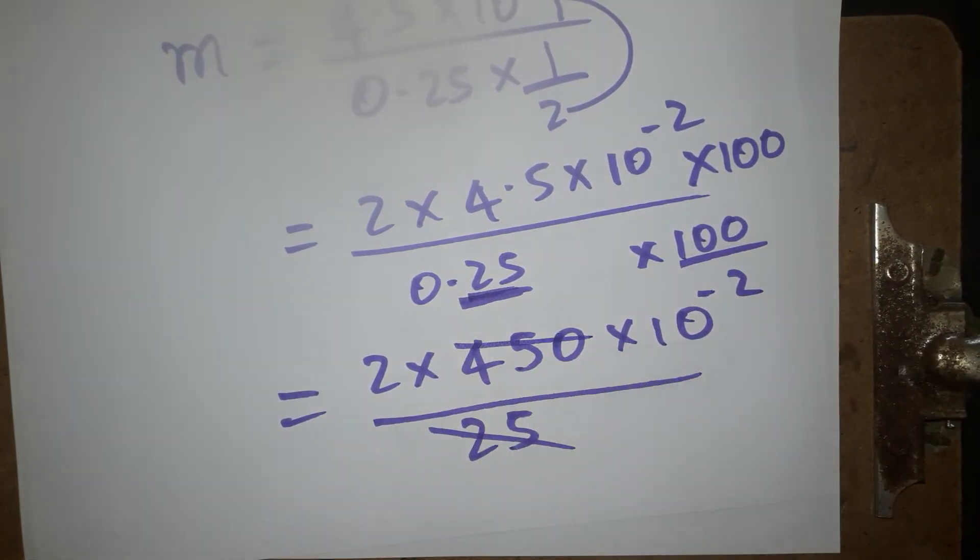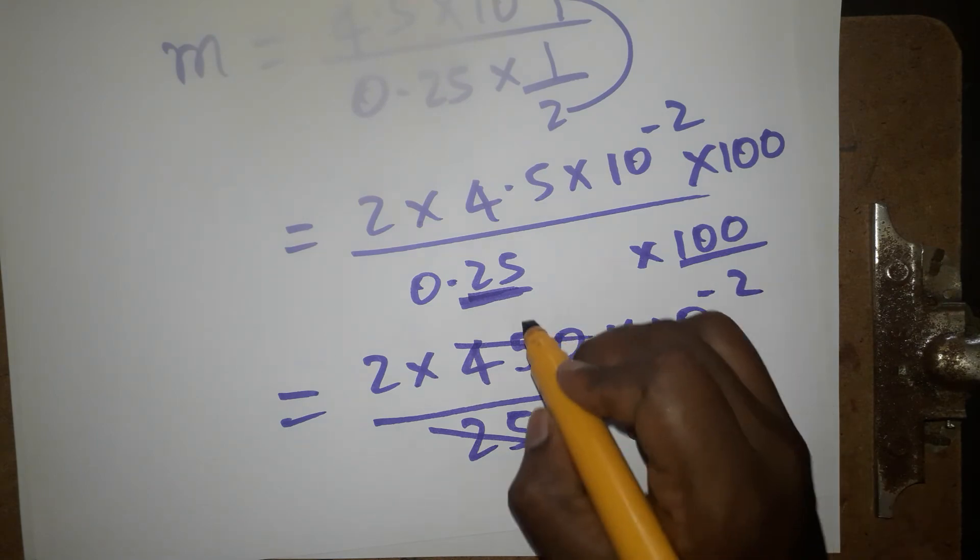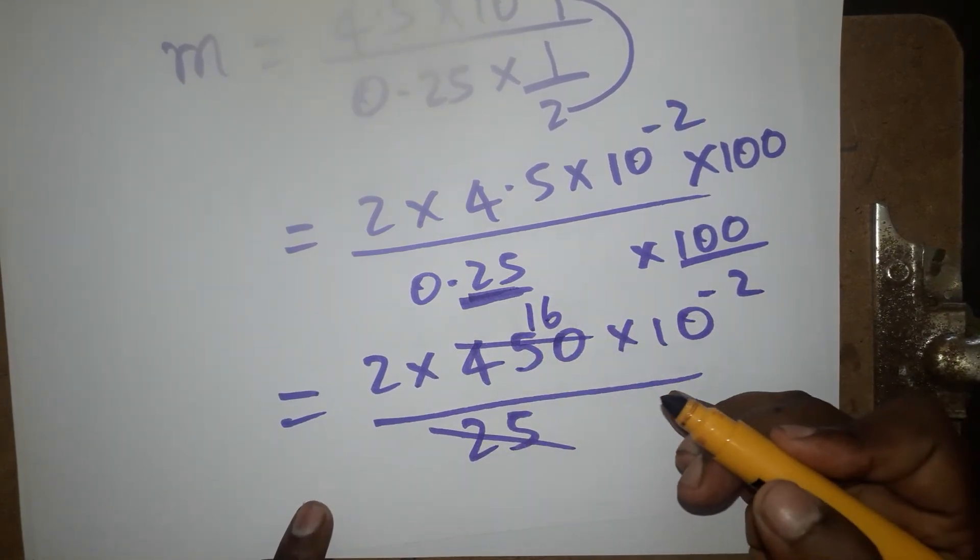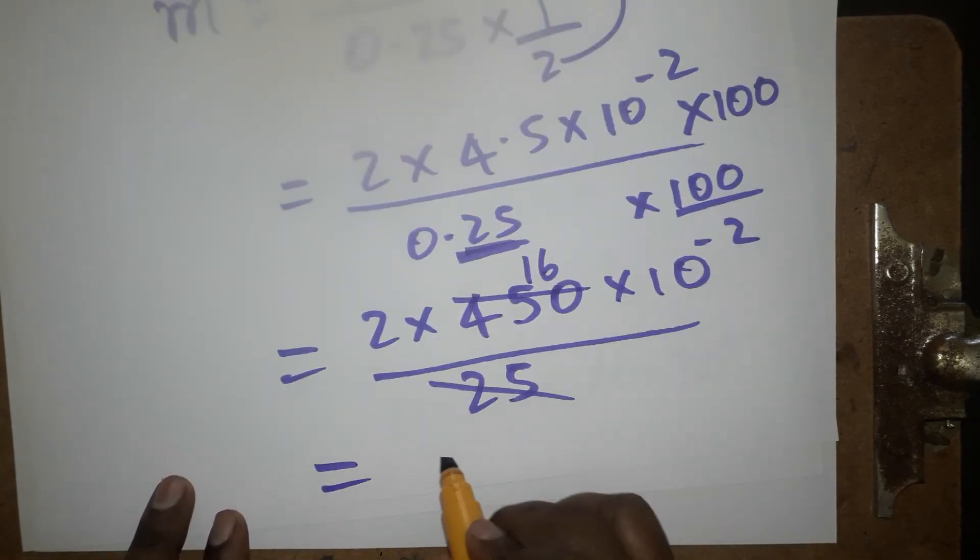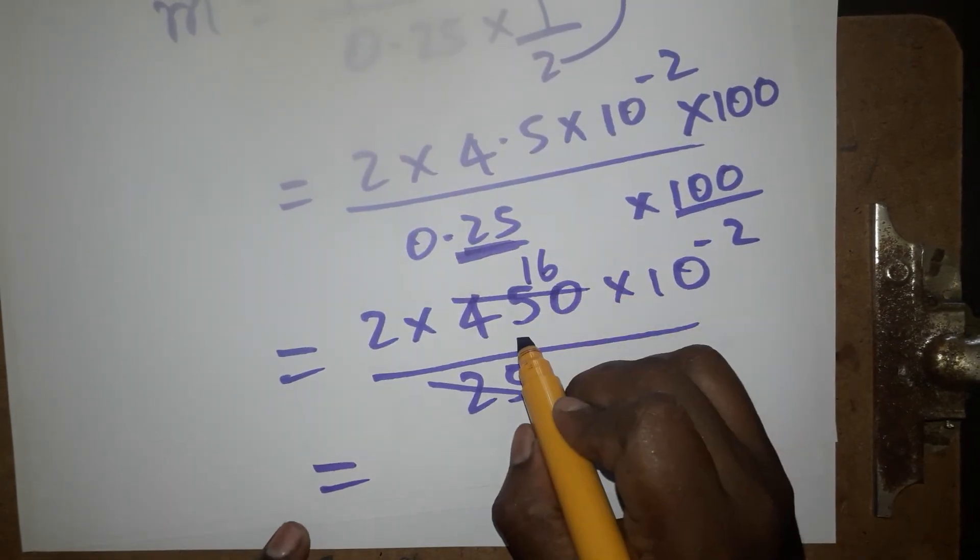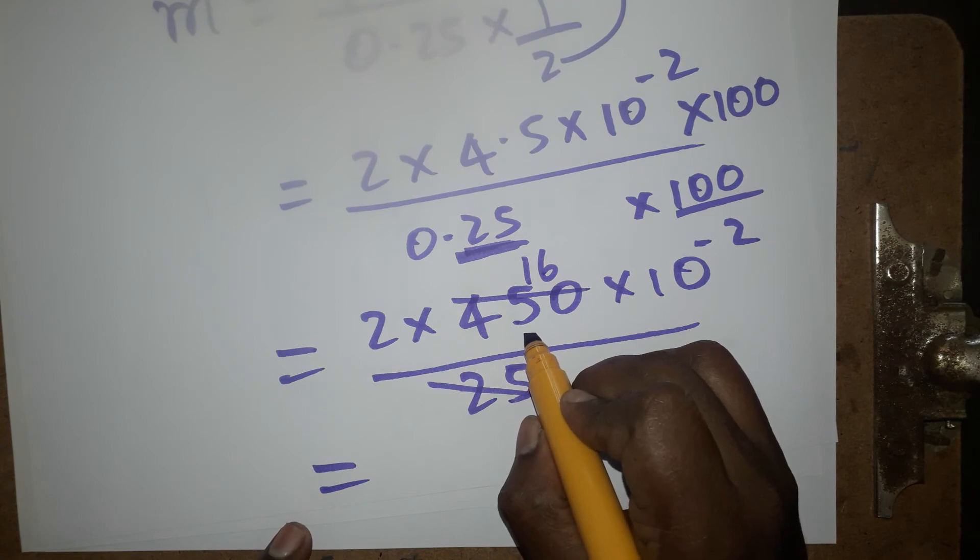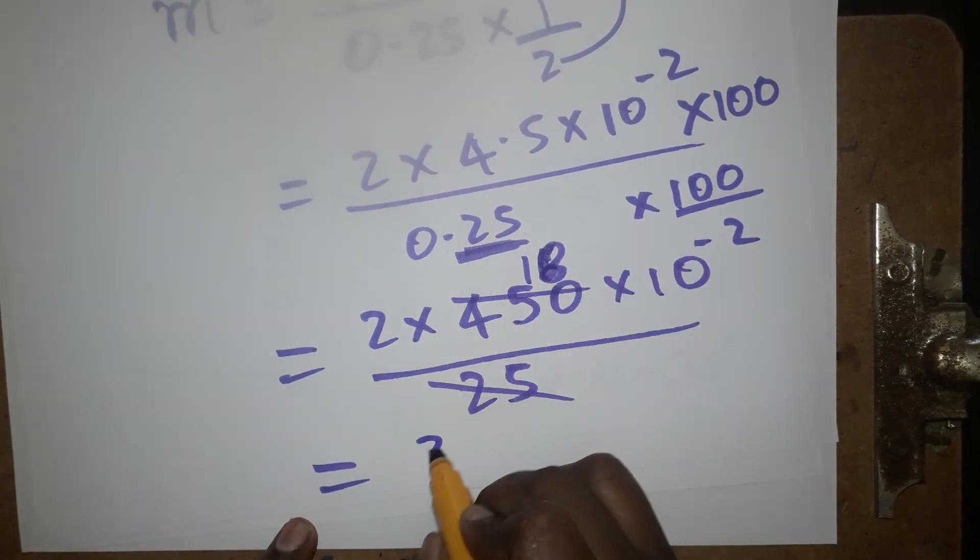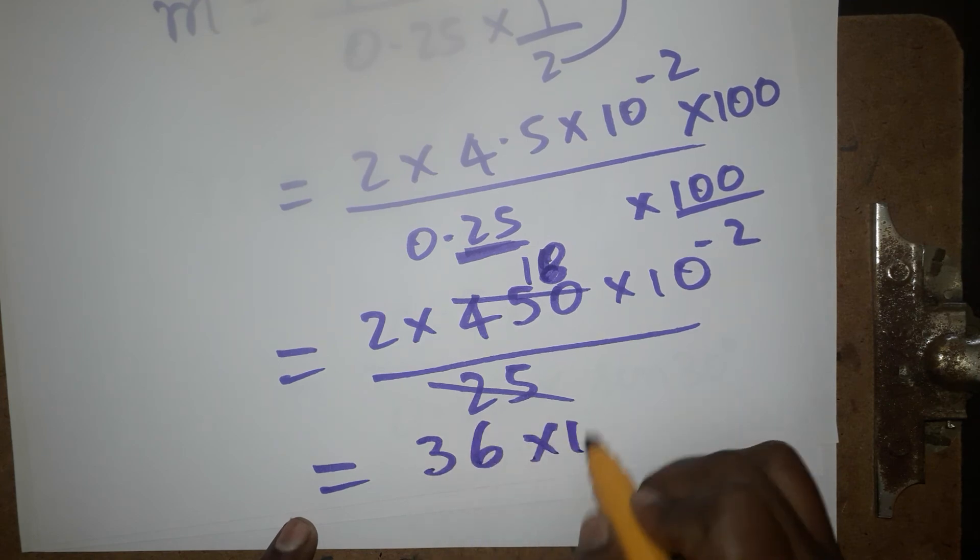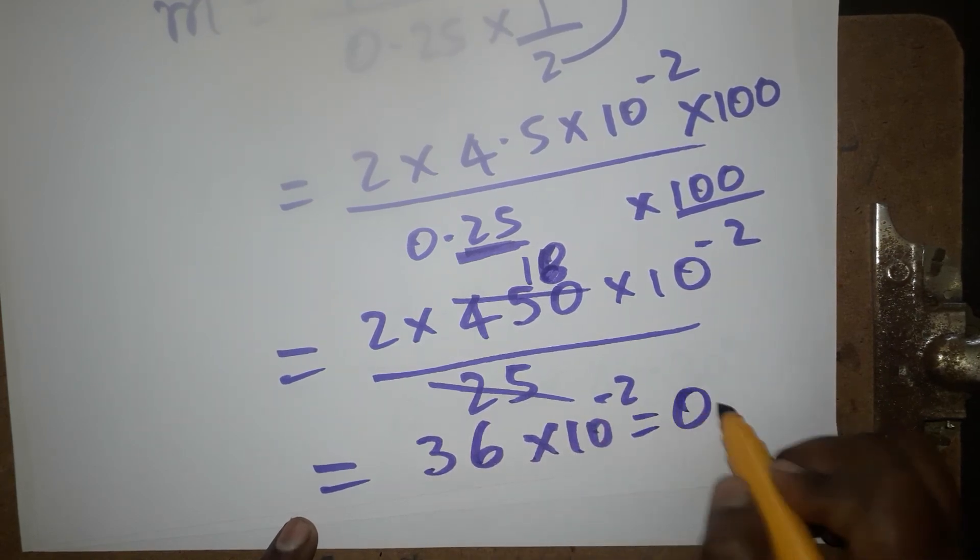This cancellation gives 18. 18×2 equals 36×10⁻², which equals 0.36.